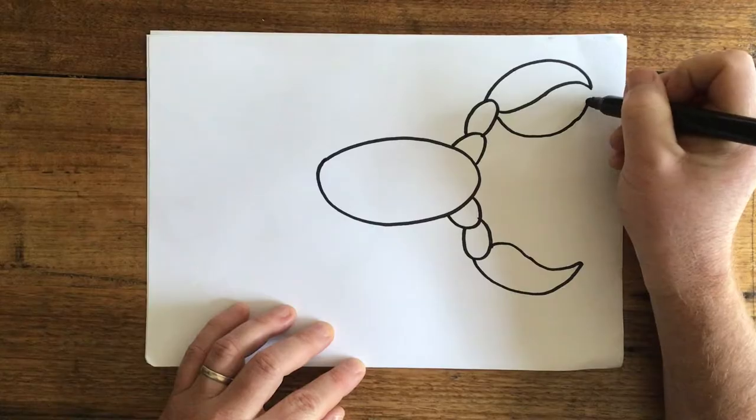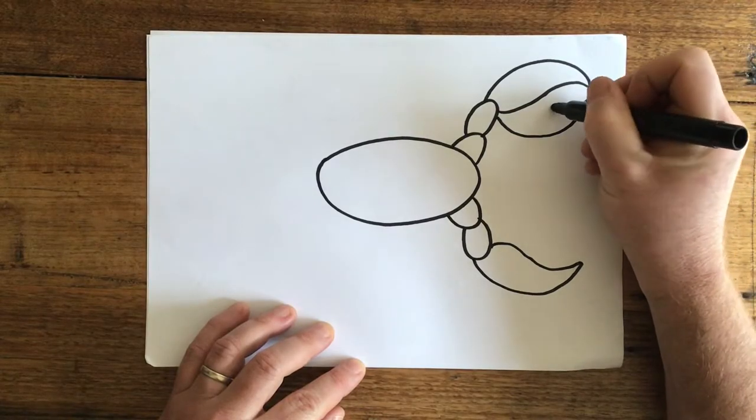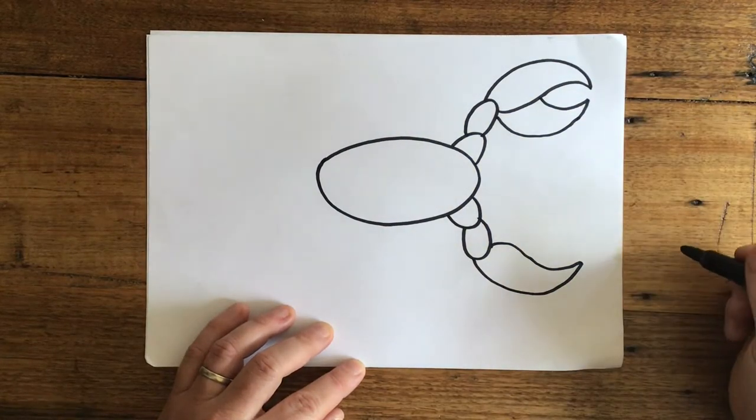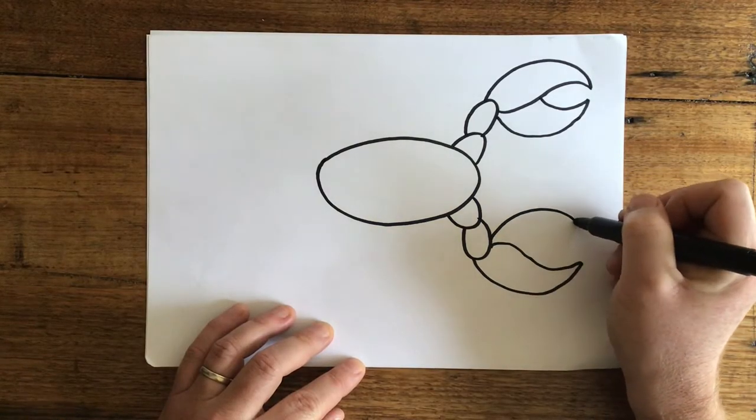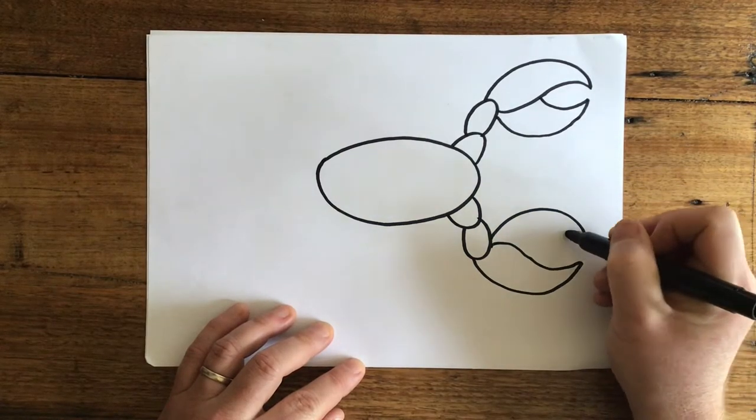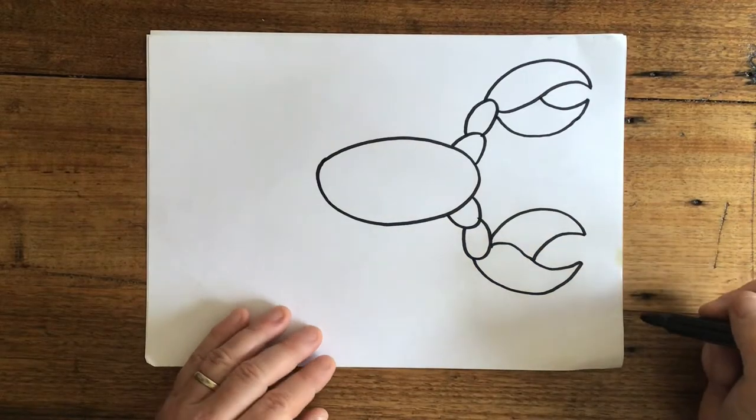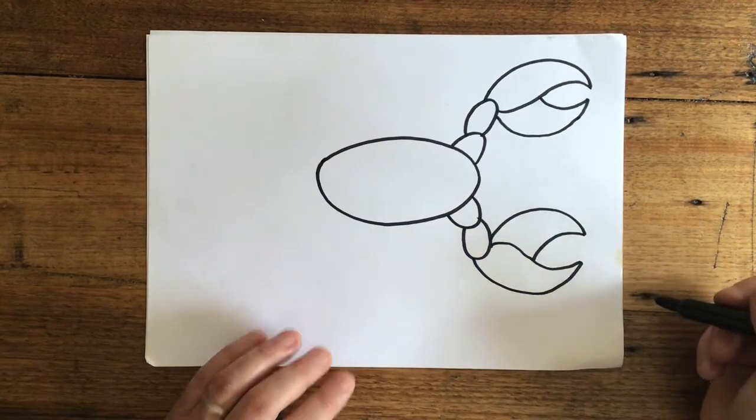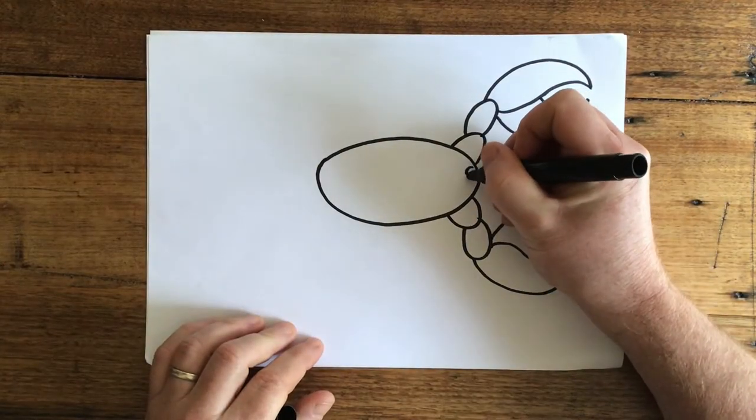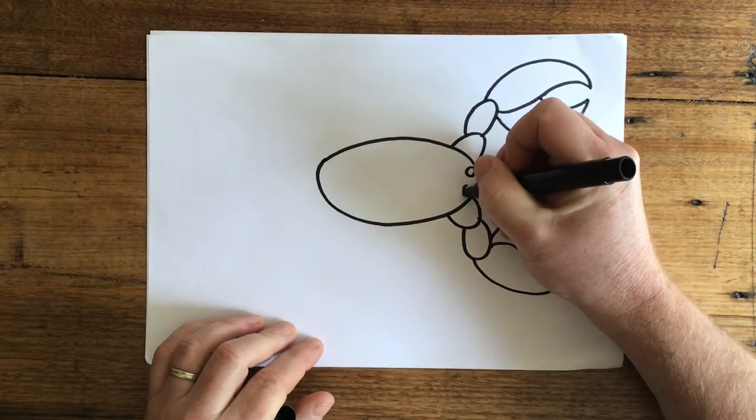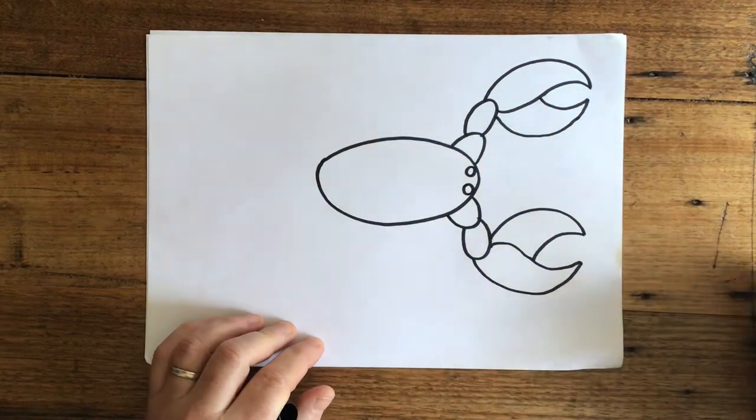Comes all the way near there and bring that back into the middle to make a pincer. Let's do the same this side. We're going to curve up this way this time and bring it back into the middle. And we have some pincers for our scorpion. Let's give our scorpion some eyes like this.